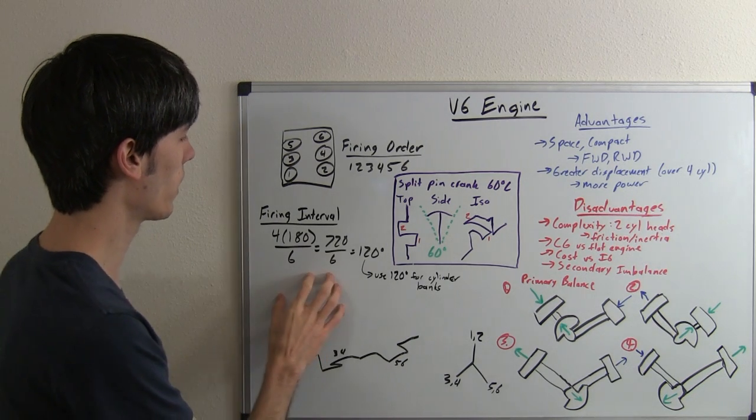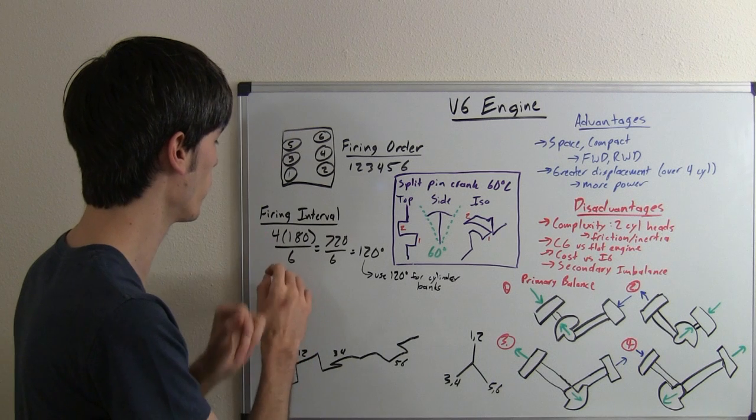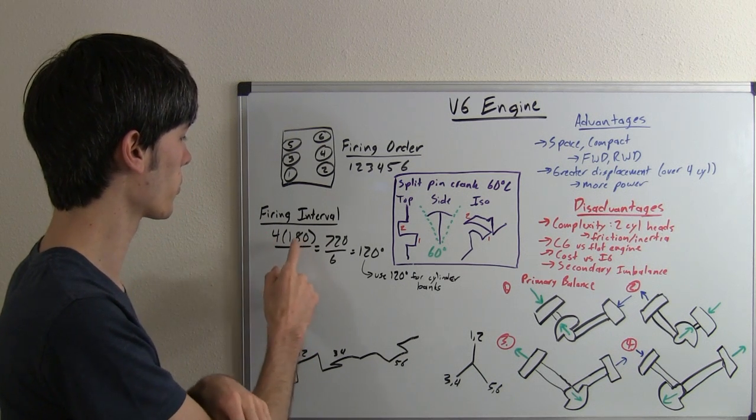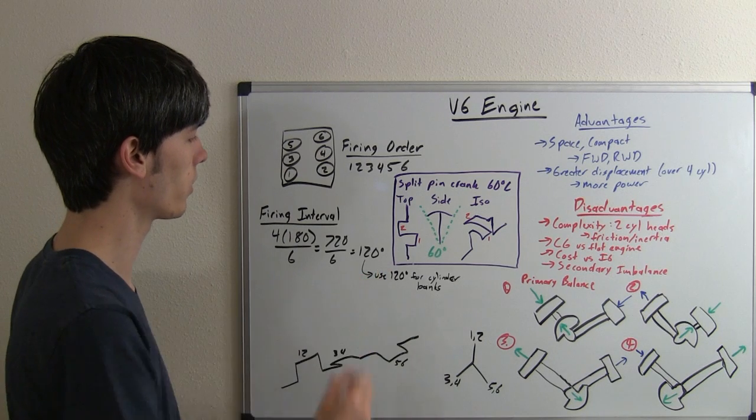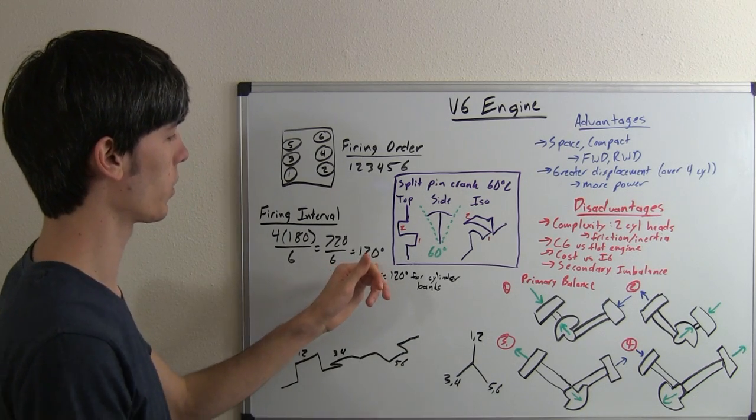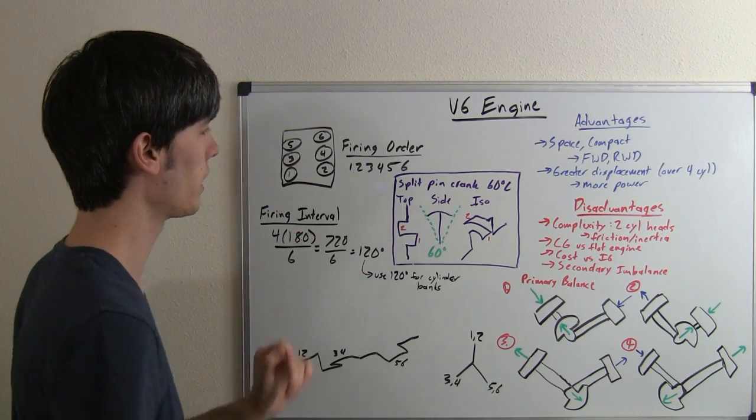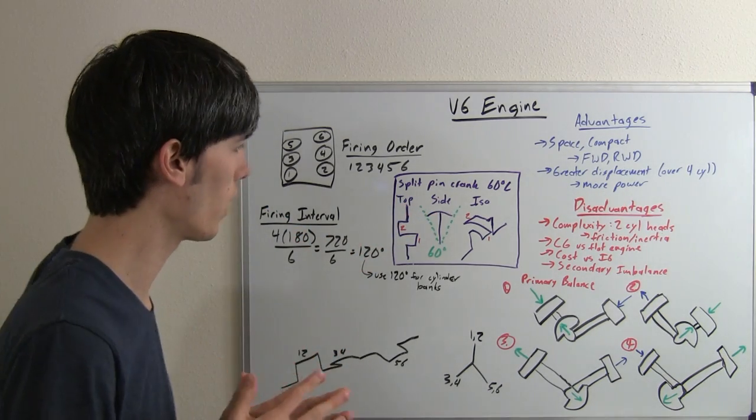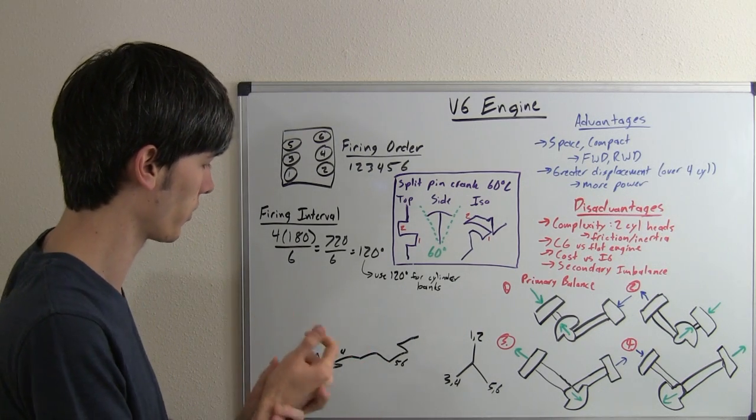How do we figure out the firing interval? If you've watched my video on engine balance, you know you multiply the number of strokes by 180 degrees, divide that by the number of cylinders, and we get 120 degrees. That's also the angle we will use for the V itself, so it will be a 120 degree V angle engine. Now more commonly used is a 60 degree angle, and I'll get into that later in this video.